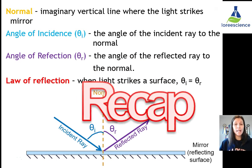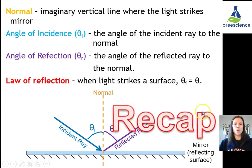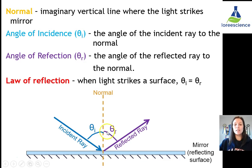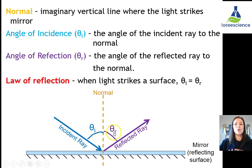A quick recap of some terminology we need to remember. The normal is a perpendicular line, 90 degrees to the plain mirror, where the light is going to be striking the mirror. The angle of incidence is measured between the incident ray and the normal. The angle of reflection is measured between the normal and the reflected ray. And the law of reflection states that the angle of incidence is equal to the angle of reflection.